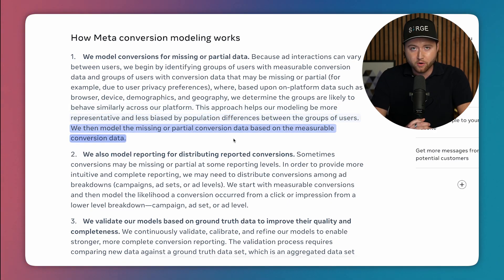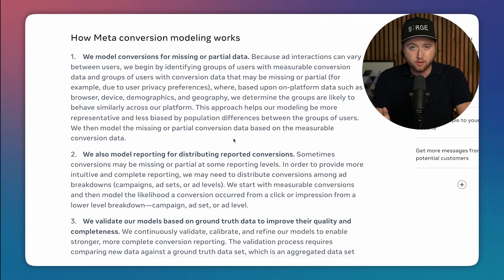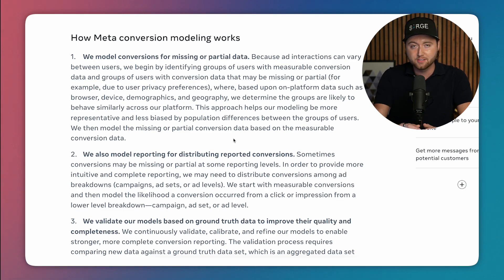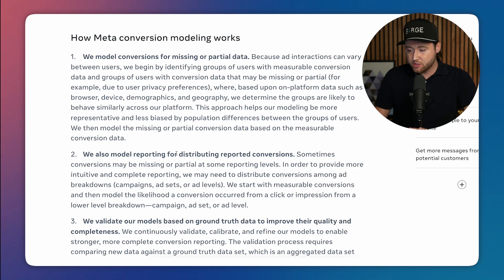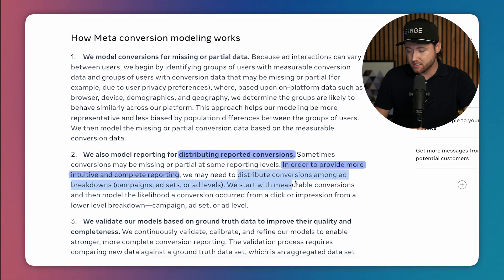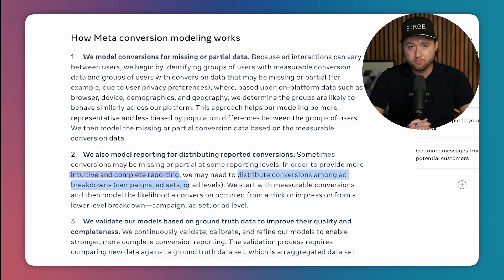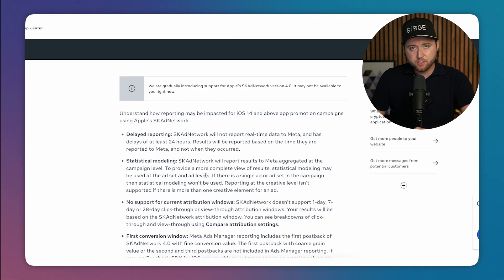To sum that up simply: if somebody can't be tracked from your Facebook ad but clicks and purchases, Facebook essentially says this user is most similar to other people who have purchased from ads in the past, so we're going to claim that purchase. This is not accurate and can largely overestimate or underestimate your purchases. They also distribute reported conversions among ad breakdowns — so if you get 10 purchases from a specific ad, it might only show five on that ad and place the other five across different ads they think also contributed to a sale.